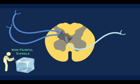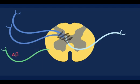Now, if there are also non-painful signals occurring, like rubbing your toe or putting a cold pack on it, a different nerve fiber called A-beta activates inhibitory interneurons, which are at the synapse between nociceptors and second-order neurons. This then closes the gate and blocks pain signals from transmitting.